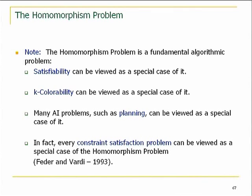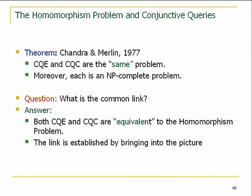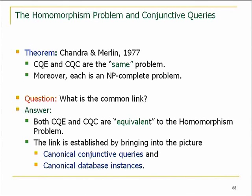Vardi will talk tomorrow at the conference about aspects of constraint satisfaction and its connection to homomorphisms. Now let's explain what is behind the Chandra-Merlin theorem — this rather surprising situation where evaluation and containment are very different problems for full first-order logic, but in this fragment they are the same problem. The fact is that they are both equivalent to the homomorphism problem. For this I need to introduce canonical conjunctive queries and canonical database instances.